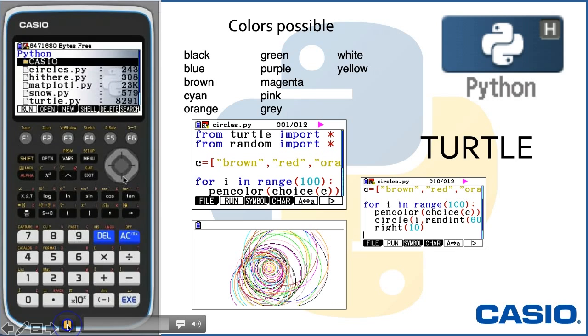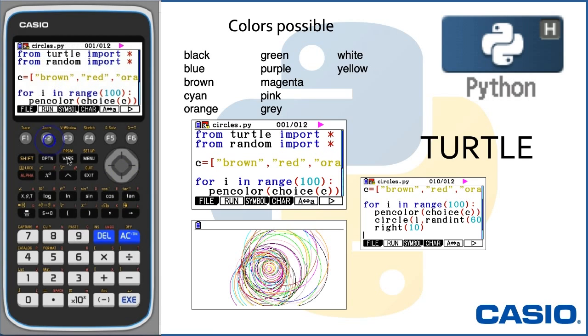We created a list called C. And in that list, I've put all the colors that are available for use on the program. And we're going to write a program that is going to randomly select a pen color and then create 100 circles of differing size and different colors.